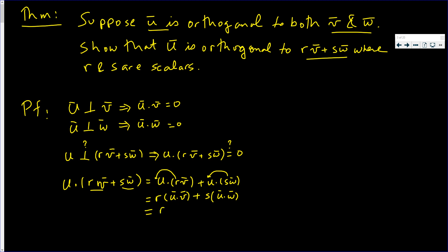So this is r times u·v—they're orthogonal, so that's zero. It's r times zero. Plus s times u·w—they're orthogonal, so the dot product is zero. So we get zero plus zero which is zero. Turns out that u dot this vector is in fact zero. We proved the theorem.